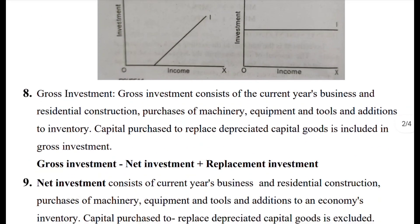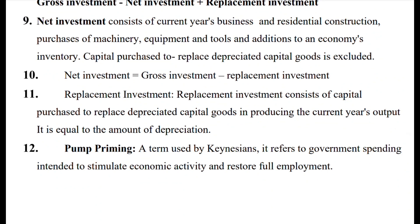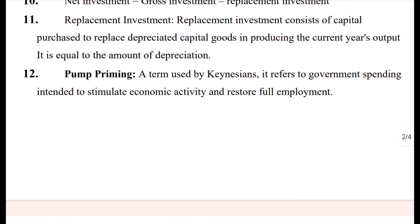Gross investment consists of the current year's business and residential construction, purchases of machinery, equipment, tools, and addition to inventory. Capital purchases to replace depreciated capital goods are included in gross investment. Gross investment equals net investment plus replacement investment. Net investment consists of current year's business and residential construction, purchases of machinery, equipment, tools, and additions to inventory, minus depreciation. Replacement investment equals the amount of depreciation.